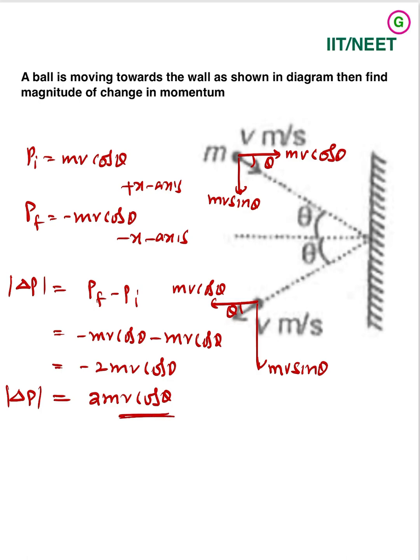Suppose along vertical, here along vertical, delta p is p final minus p initial. Even magnitude also, p final is moving down.